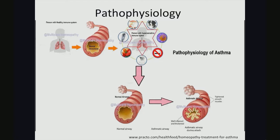This graphic illustrates the pathophysiology of asthma. As you can see, a specific trigger leads to the activation of airway mast cells and macrophages. Pro-inflammatory mediators will eventually result in airway contractions and ultimately bronchoconstriction, leading to the asthma exacerbation.